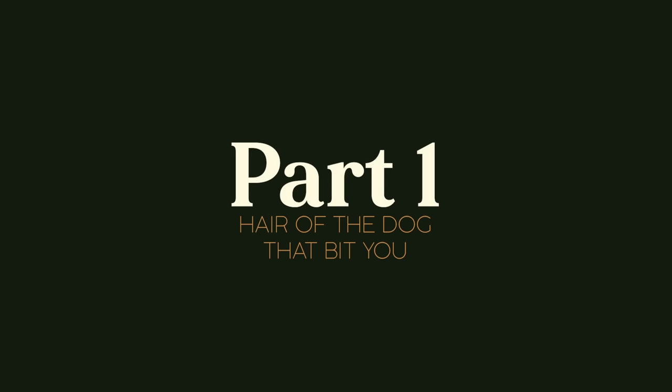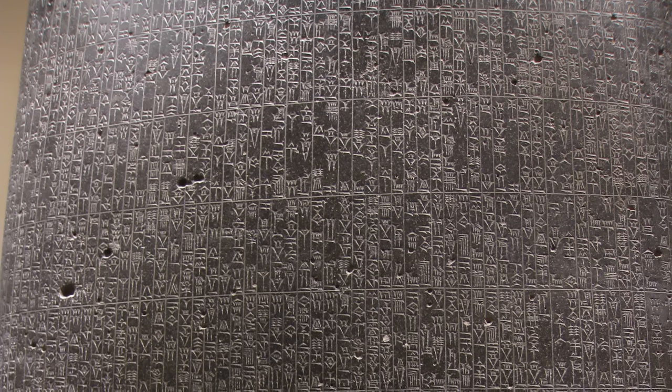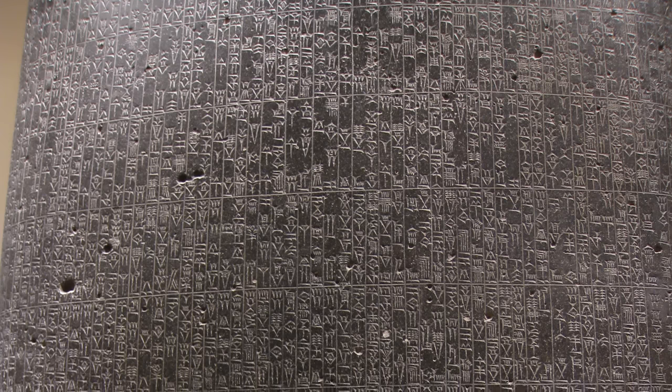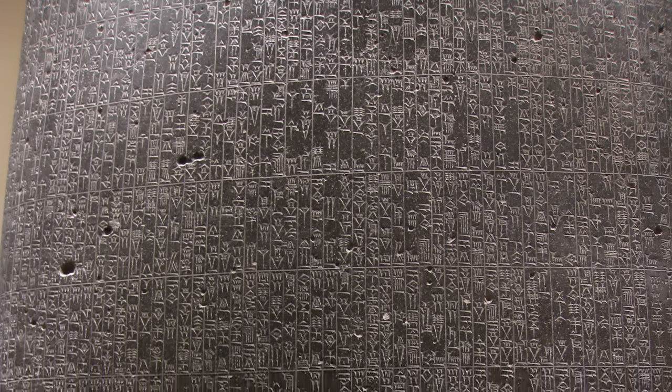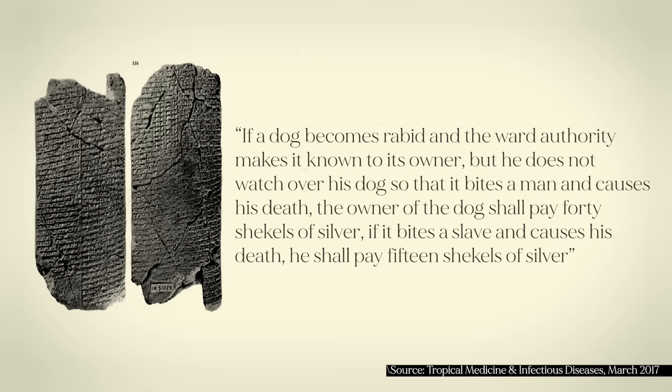If untreated, mortality is 100%. If it is treated, mortality is lower, but that took us a while to figure out. Rabies is one of humanity's oldest documented diseases. The first chapter in your world history textbook probably started with the Mesopotamians and the Code of Hammurabi — rabies was documented before that. The idea that dog bites could cause death was documented over 4,000 years ago in the Laws of Eshnunna.